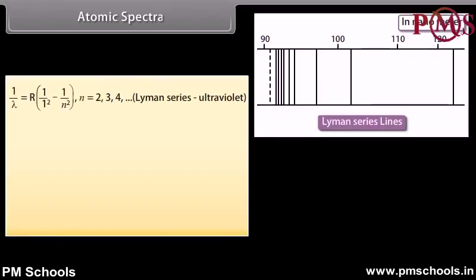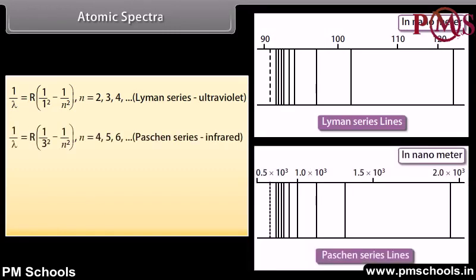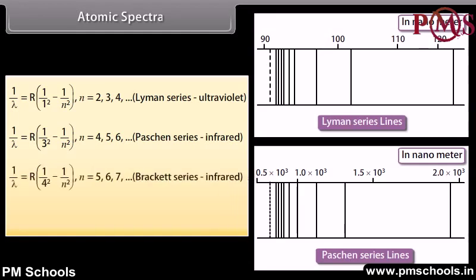Other series of lines exist outside the visible region. The Lyman series: 1/λ = R(1/1² − 1/n²), n = 2, 3, 4, 5... The Paschen series: 1/λ = R(1/3² − 1/n²), n = 4, 5, 6, 7... The Brackett series: 1/λ = R(1/4² − 1/n²), n = 5, 6, 7, 8...